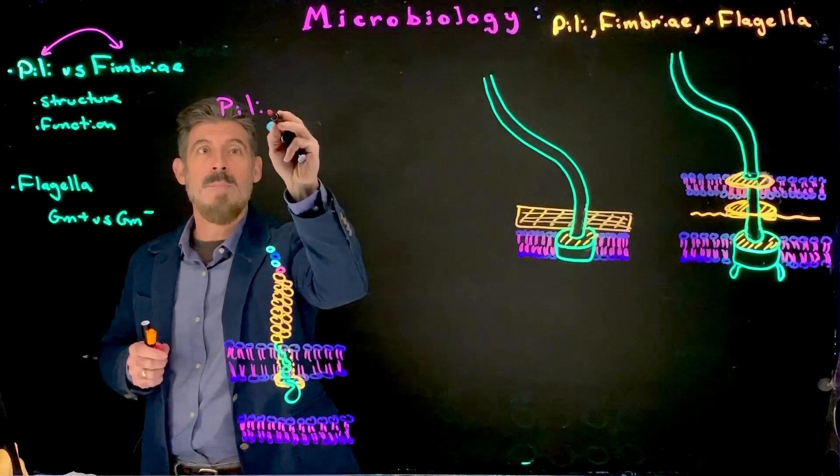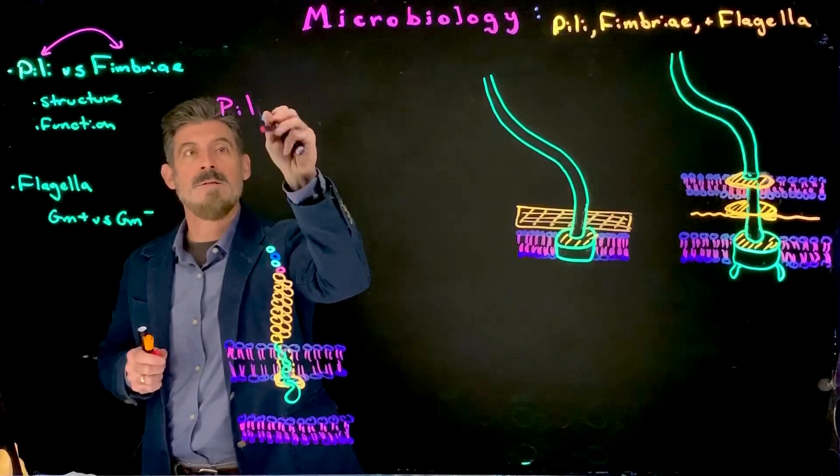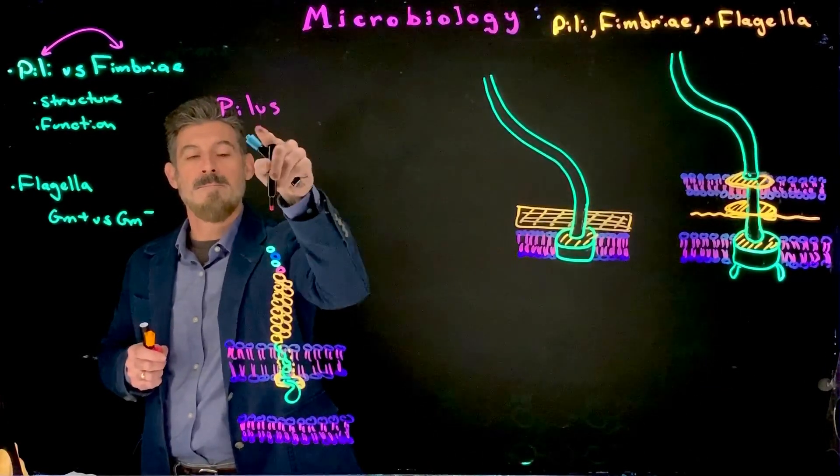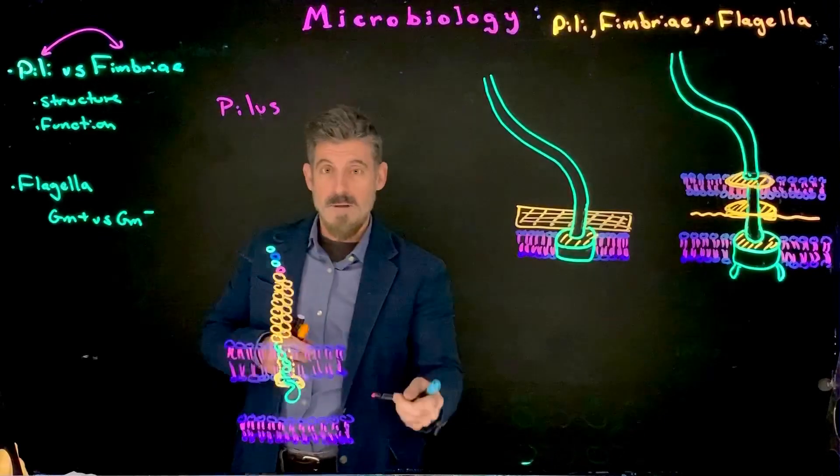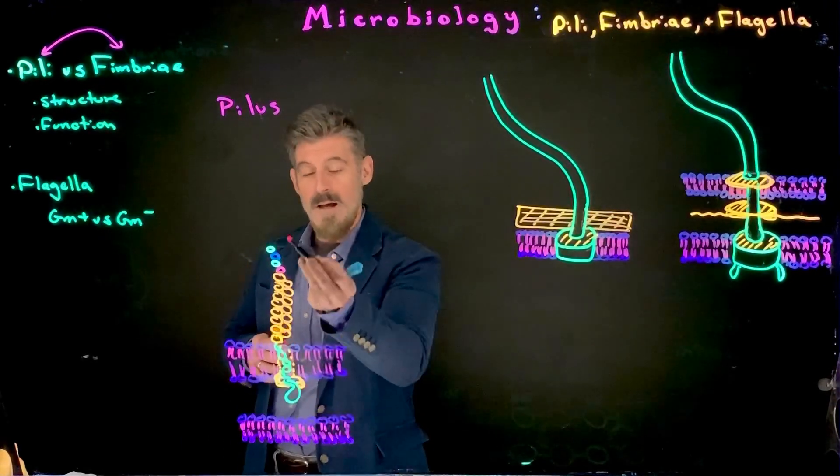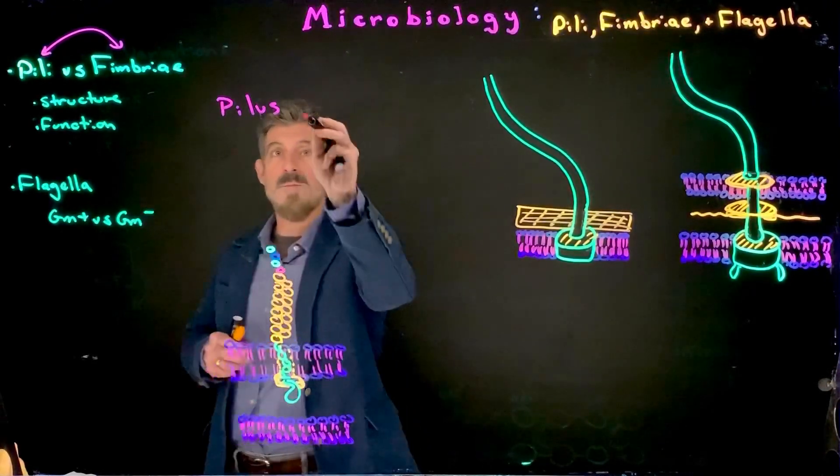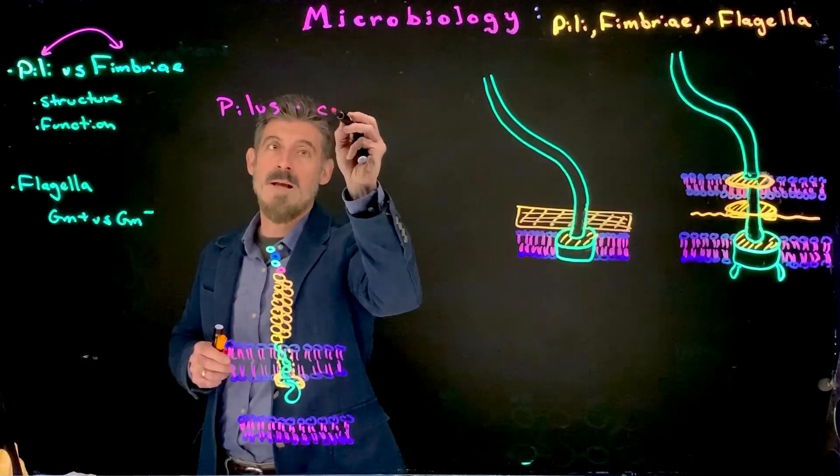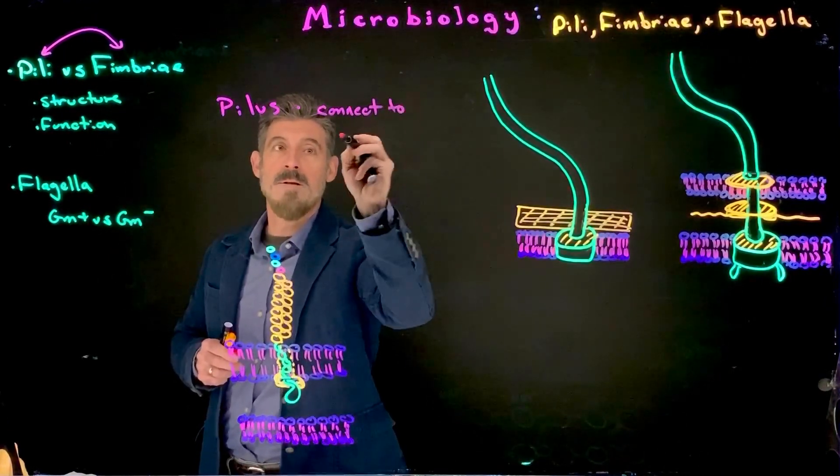So for example, a pili, or a pilus, say a pilus is singular, is a structure that extends outside the cell, and it's used specifically to connect to other cells.